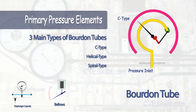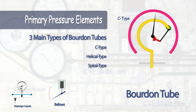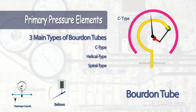The pressure inlet is attached to one end of a tube. A mechanical linkage connects the other end of the tube to a pointer. Changes in pressure will cause the tube to contract and expand, which causes the pointer to move respectively.